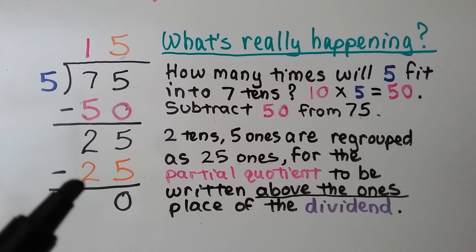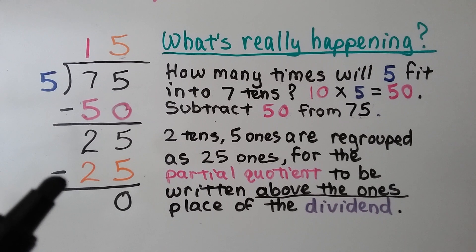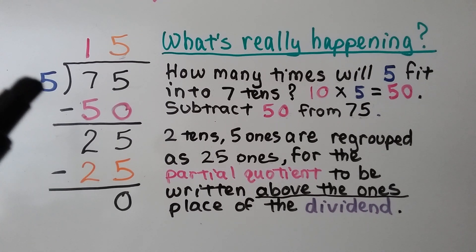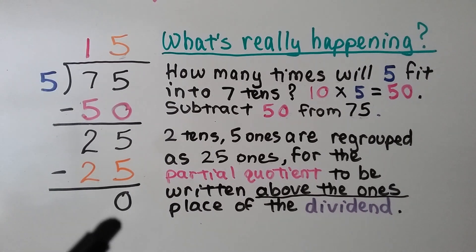Five goes into twenty-five ones five times. We subtract that twenty-five — five times five is twenty-five — and we get a zero.